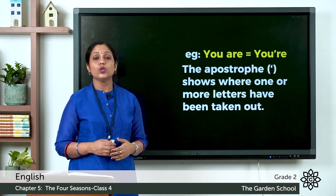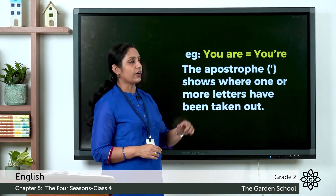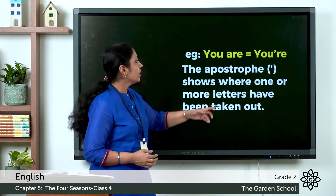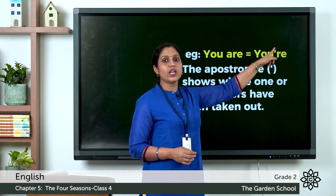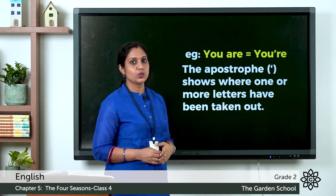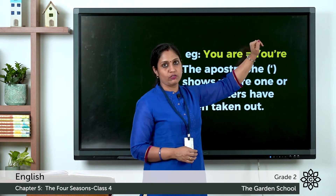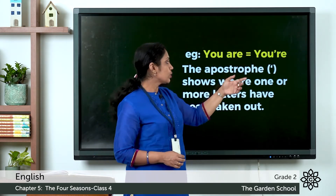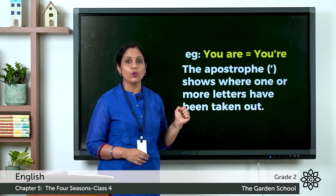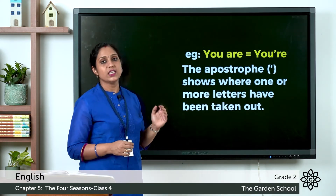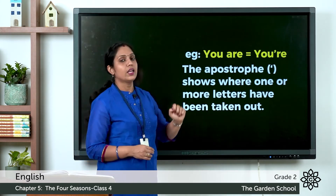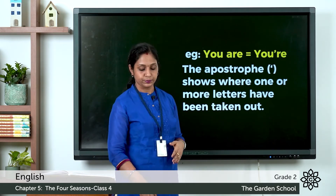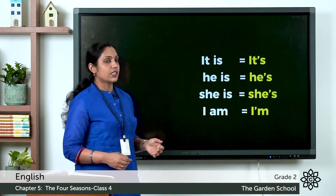Look at the words you are — these are two words. When we join them, it becomes you're: Y-O-U apostrophe R-E. The letter A is missing, so we insert an apostrophe to show that. The apostrophe shows where one or more letters have been taken out.